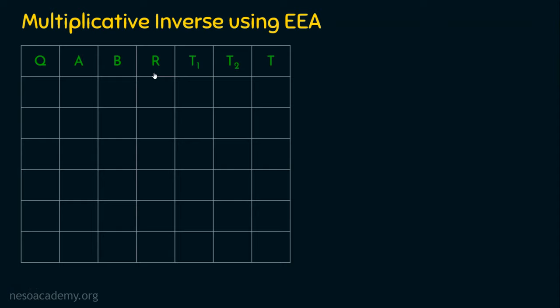Now, we are going to extend this Euclidean algorithm — that is why it is named the extended Euclidean algorithm. What is the extension we are making? We are additionally including three more columns: T1, T2, and T. Don't worry about all the columns; when we solve the example problem, we will understand things clearly.